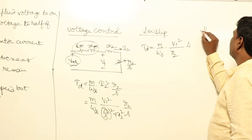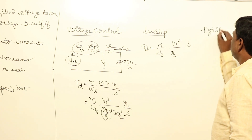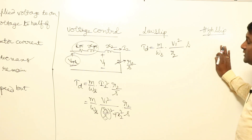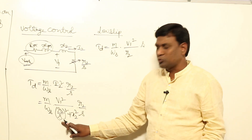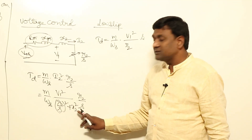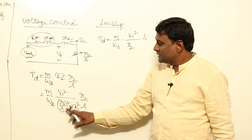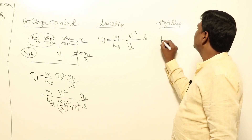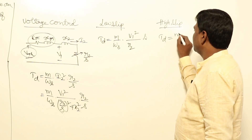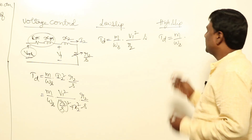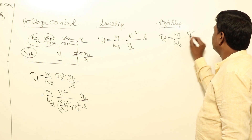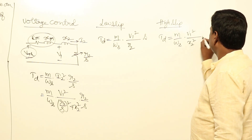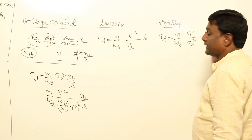Now in the high slip region, slip is high — nearer to 1. Under those conditions, X2 will be more and R2 by S will be low. So TD is approximately M by omega_S into V1² divided by X2² into R2/S.